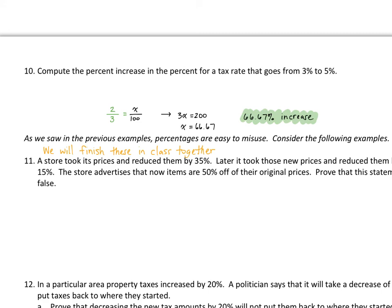Going back to the tax rate increasing from 3% to 5%: the amount of increase is 2, and we started at 3. Setting 2 over 3 equal to X over 100, we cross-multiply and get X equal to 66.67. So the tax rate increased by 66.67%. We'll finish the remaining examples next class.